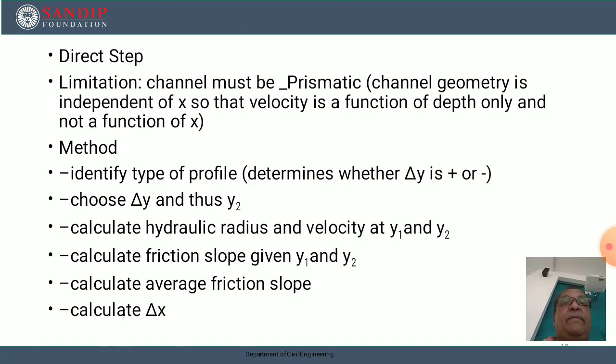In case of direct step, the limitations are: the channel must be prismatic, that is its slope and cross-sectional area should be constant, so that velocity is a function of depth of flow and not the distance x. The method involves identifying the type of profile and finding whether Δy is positive or negative.